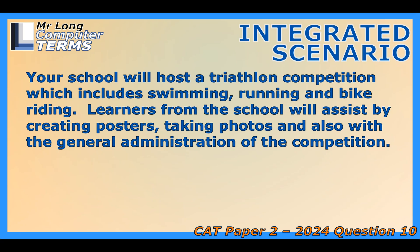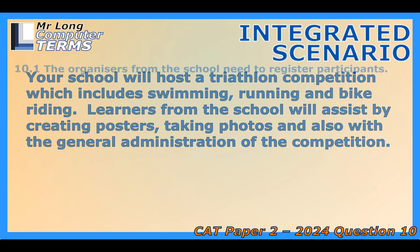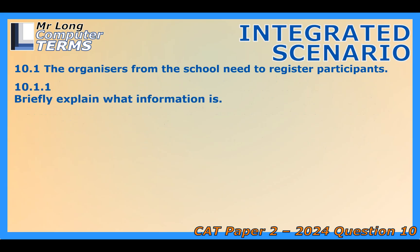Before we jump into the details, we need to ground this whole thing. The sources start with a basic but crucial distinction: data versus information. People use them interchangeably, but they're not the same. Data is just raw facts — the number 42, maybe a timestamp like 1:30 p.m., a name like Jane Doe. It doesn't mean much on its own.